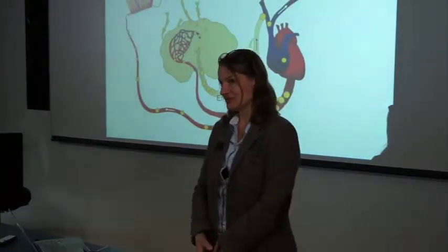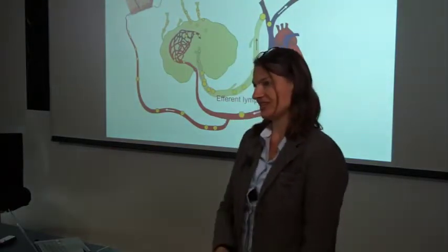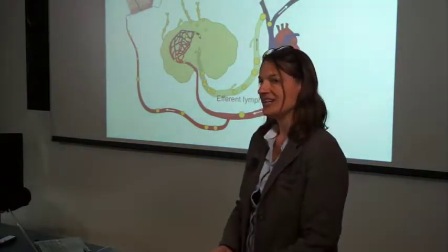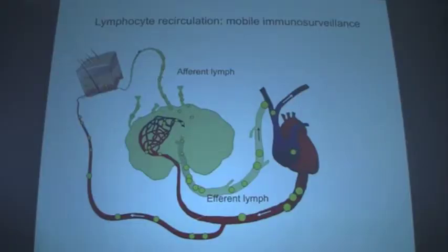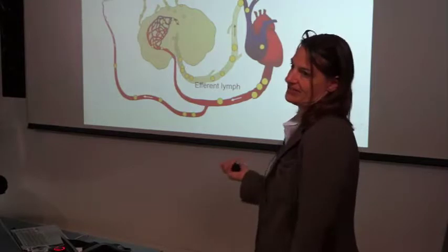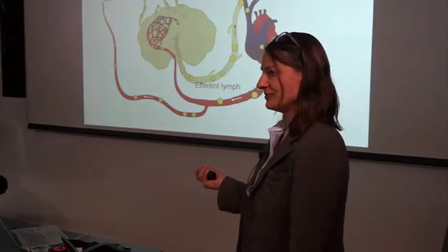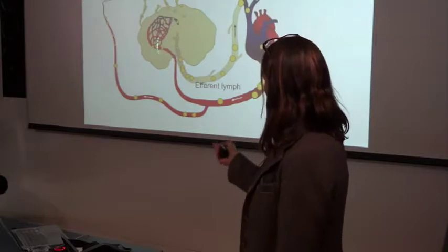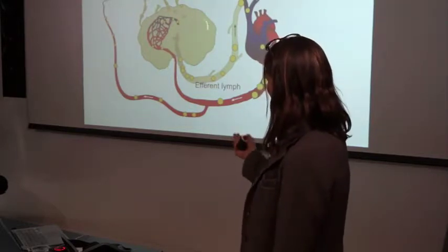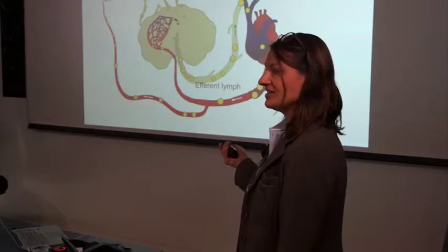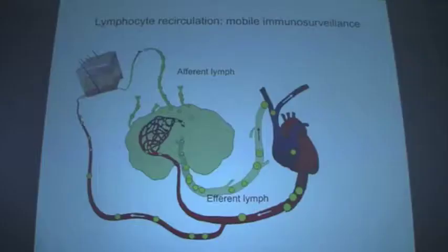We're interested in lymphocyte recirculation. As you all know, lymphocytes recirculate continuously throughout the body. They travel in the bloodstream and leave the blood to enter organized lymphoid tissues like the lymph node. They enter the lymph node by migrating through specialized postcapillary venules, termed high endothelial venules for lymph nodes and Peyer's patches. Lymphocytes look for antigen in the lymph node, and if they don't find antigen, they leave through the efferent lymph and then by the thoracic duct re-enter the bloodstream.